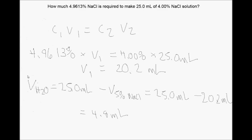Before lab, you should have all calculations performed in your notebook so you can quickly make solutions and perform the experiment in the allotted time. In the lab, it's a good idea to measure conductivity as you make each solution. For example, if you make a 5% solution with conductivity of 10,000, when you dilute to 4% (80% of the concentration), it should have about 80% of the conductivity, or 8,000. If it's very different from that, something may need to be fixed before making the rest of your solutions.